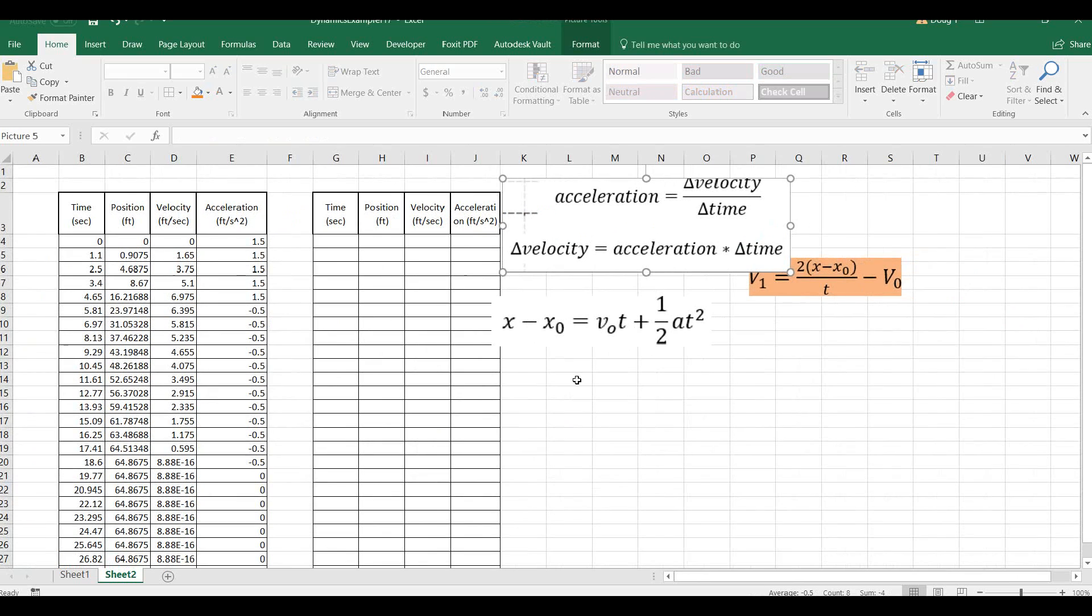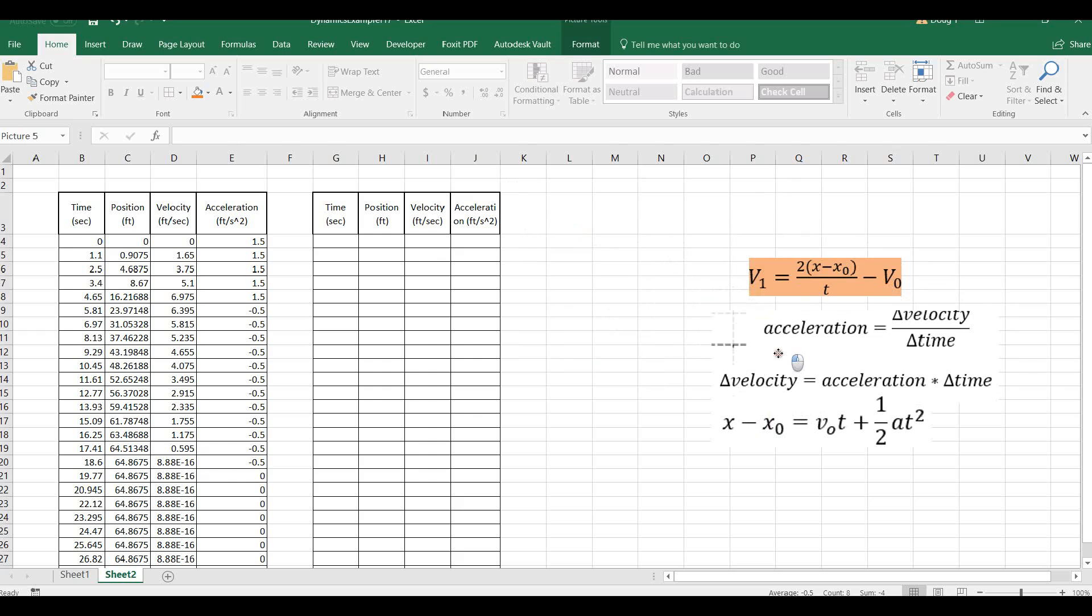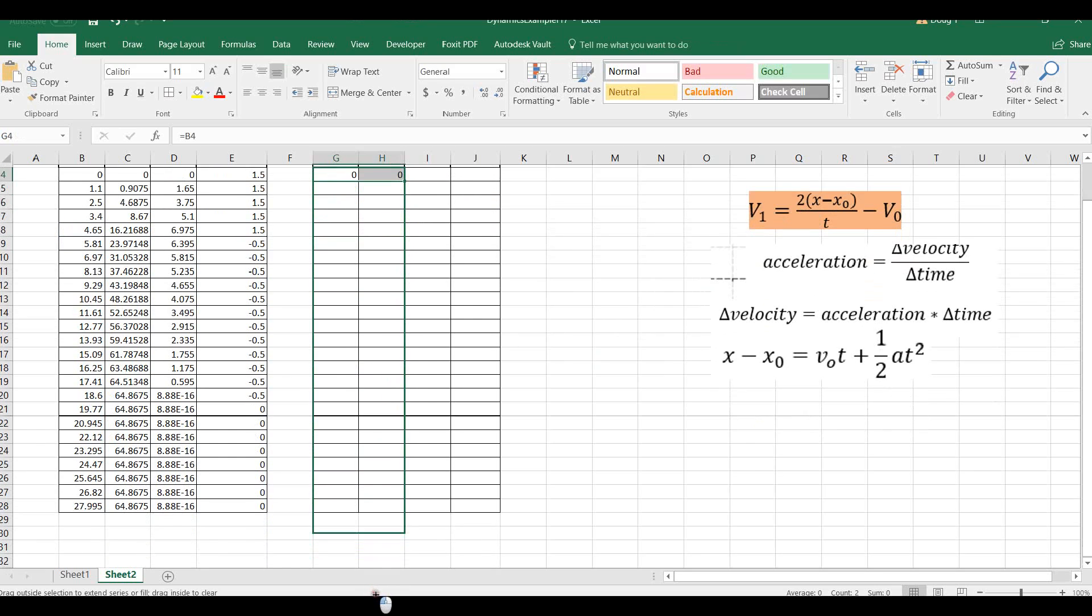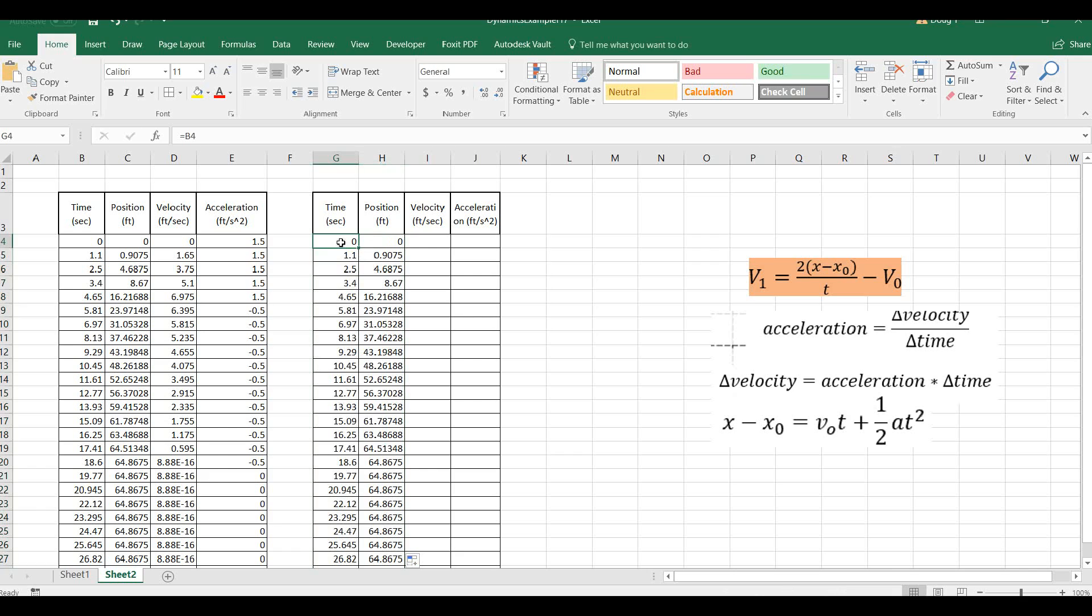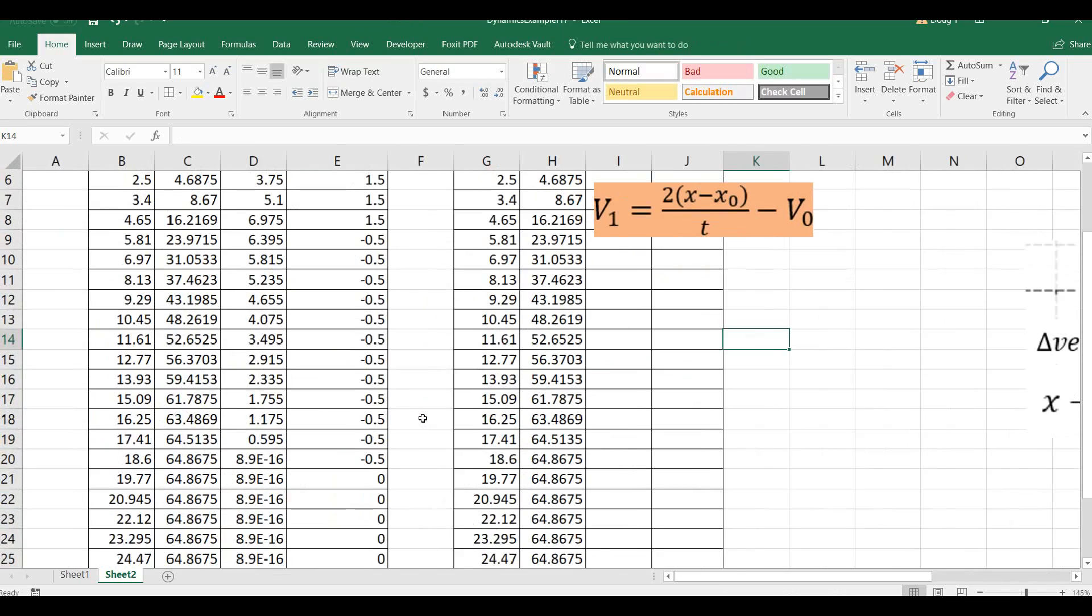What if we started in a different spot? I'm going to just copy these times over and copy these positions over. This time around we're going to fill out this column, only we're going to do it starting with time and position and try and get velocity out of that. Here's our equation for velocity.